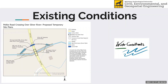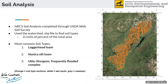This is our final project — you can see the diversion structure going north of the current bridge. One of the first steps was to do an NRCS soil analysis completed through the USDA Web Soil Survey. We did this by importing a watershed shapefile for the Silver River into ArcGIS and then looking at the different soil types. The most common soil types being loggerhead loam, Nunaka silt loam, and Ubley-Sturgeon frequently flooded complex.